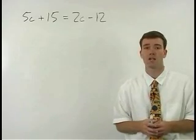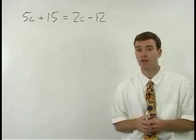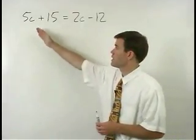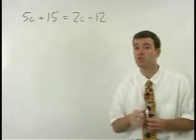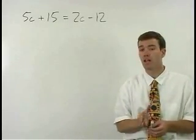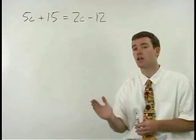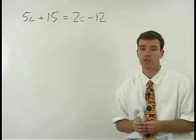Here our goal is basically the same as it was in the previous two examples. Since our variable in this case c appears on both sides of the equation, we want to put our c terms together on one side of the equation and put our numbers together on the other side of the equation.